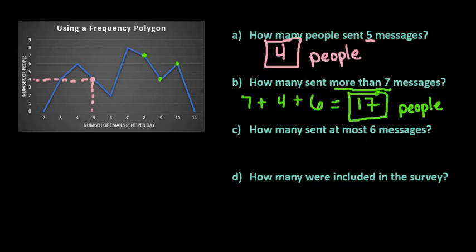For the next one what we have is we have at most six. So at most six means that they sent three, four, five, or six because at most includes six. So we would just add those numbers together.